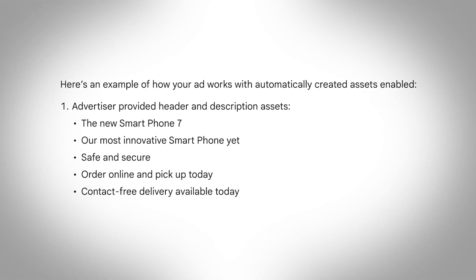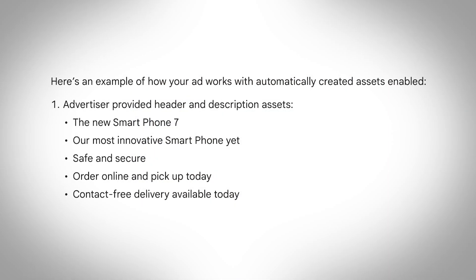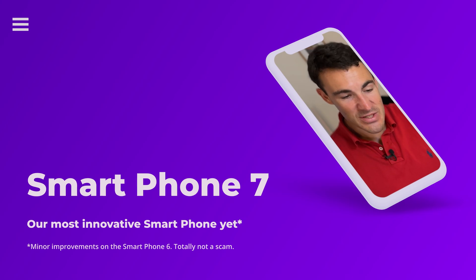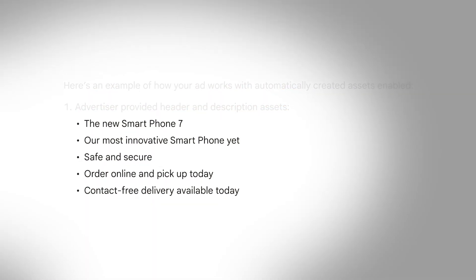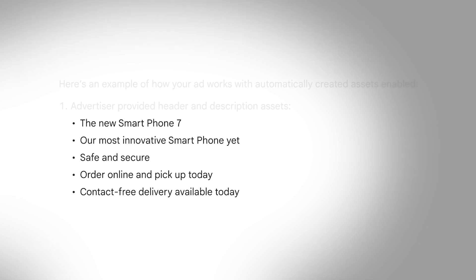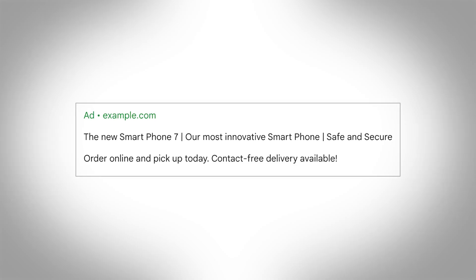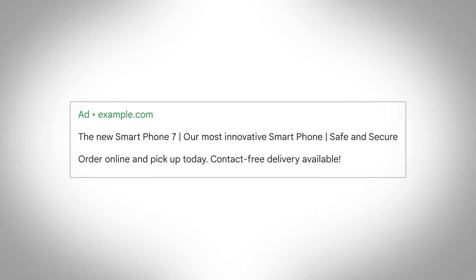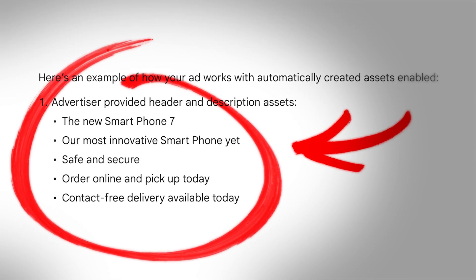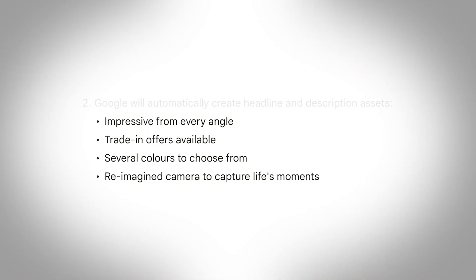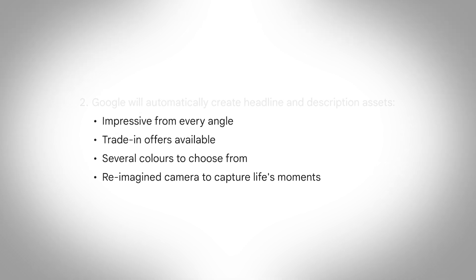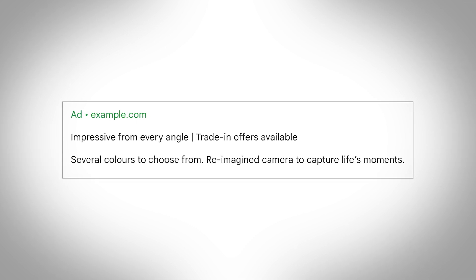If we scroll down and take a look at how this works within a Google Ad account, they give some examples. Let's assume we were advertising something called Smartphone Seven. The advertiser has written in assets like 'Smart new Smartphone Seven,' 'our most innovative smartphone yet,' 'safe and secure,' et cetera. What Google will do is produce a responsive search ad. It takes the stuff inputted by us advertisers and creates extra assets — things like 'impressive from every angle,' 'trading offers available,' 'several colors to choose from,' 're-imagined camera to capture life's moments' — and then puts that into an ad.